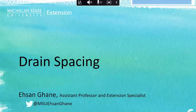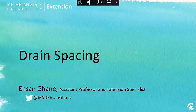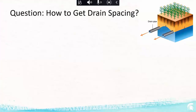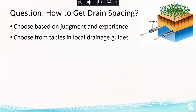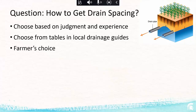Now let's talk about drain spacing. The question is: how do we typically get the drain spacing here in Michigan and the Midwest? It works in a way that the drainage contractor or the farmer chooses based on judgment and experience, or they refer to tables from local drainage guides that provide a range — for example, 20 to 40 feet based on a given soil series. The farmer has the final say because they're paying for it, and there is typically no engineering calculation behind that choice.